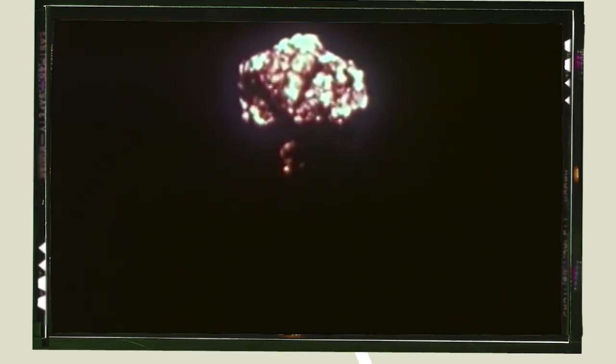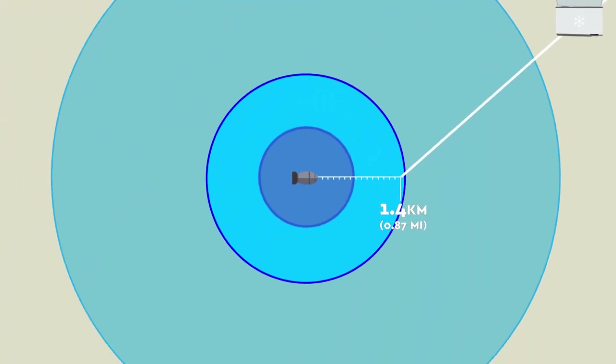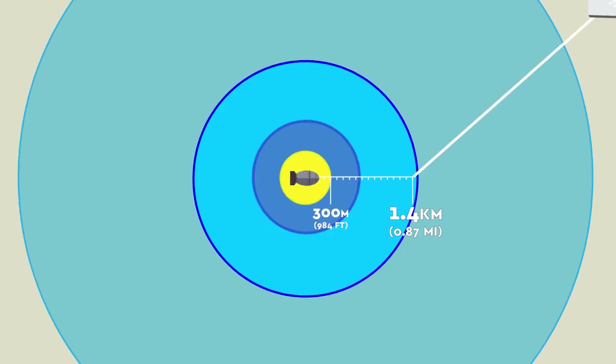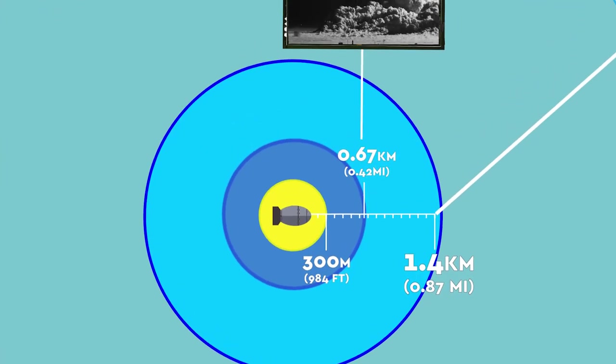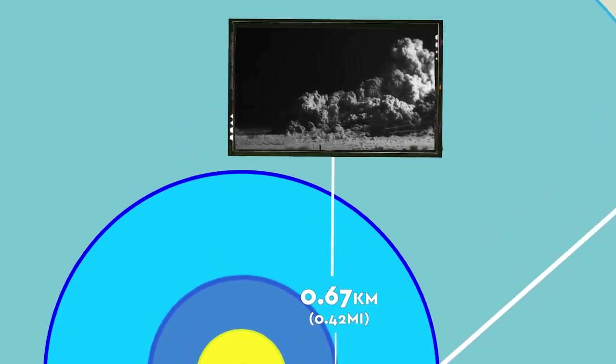For a start, the bomb dropped that day was noticeably less powerful than the one we proposed in our scenario. The Operation Cue nuke was 29 kilotons, which would have produced a fireball reaching 300 meters from the center. The most intense part of the shockwave from such a detonation would have only stretched as far as 0.67 kilometers.